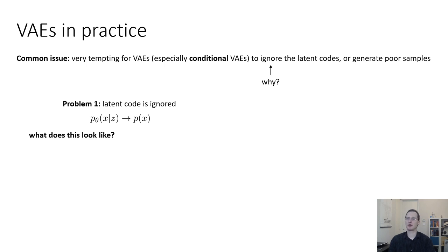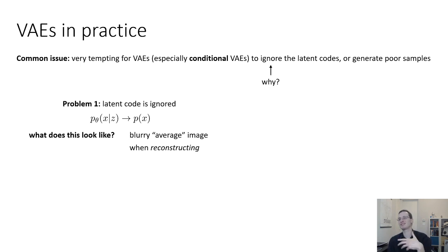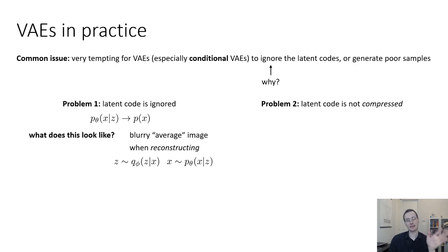You can tell the latent code is being ignored when you encode a particular image, decode it, and get back something that doesn't look like the image you encoded — basically encoding and decoding produces a blurry average image. You see this when reconstructing: you encode x through q_phi and decode through p_theta and get back an image that looks like a blurry average of all images in your dataset. This means the latent code is likely being ignored.